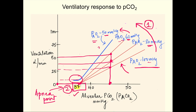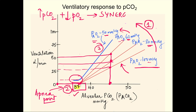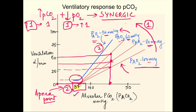The third point is that the residual ventilation at very low pO2 despite the apnea point is due to peripheral chemoreceptor stimulation. In summary, the ventilatory responses to rising pCO2 and falling pO2 are more than additive — they are synergistic. Using arbitrary units: if rising pCO2 increases ventilation by 1 unit and falling pO2 increases it by 1 unit, together they produce a change of 3 units, not 2.